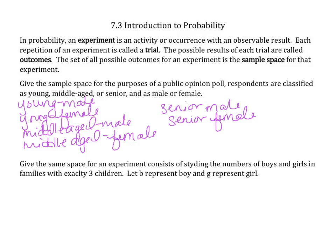Give a sample space for an experiment consisting of studying the numbers of boys and girls in families with exactly three children. Let B represent boy and G represent girl.